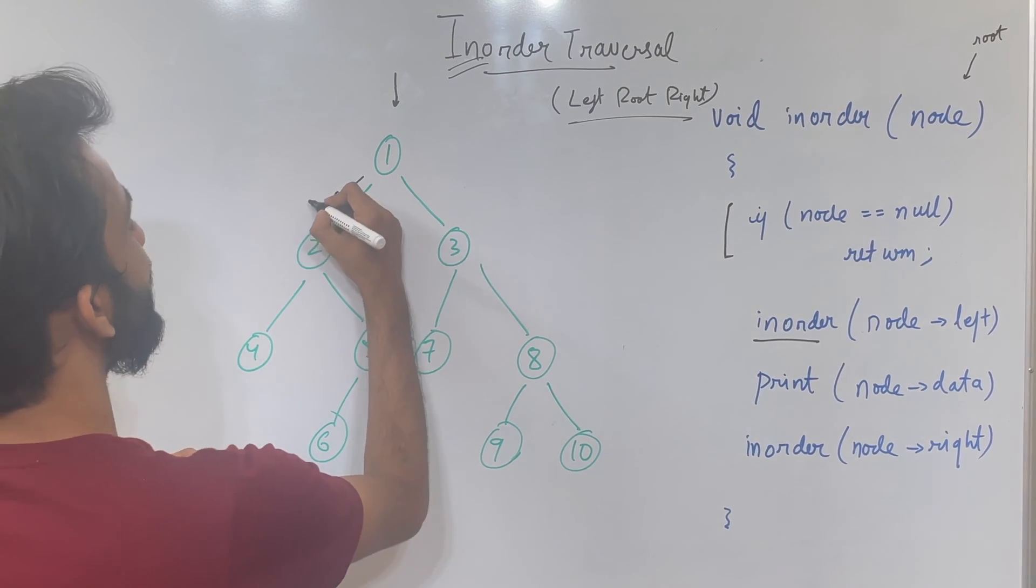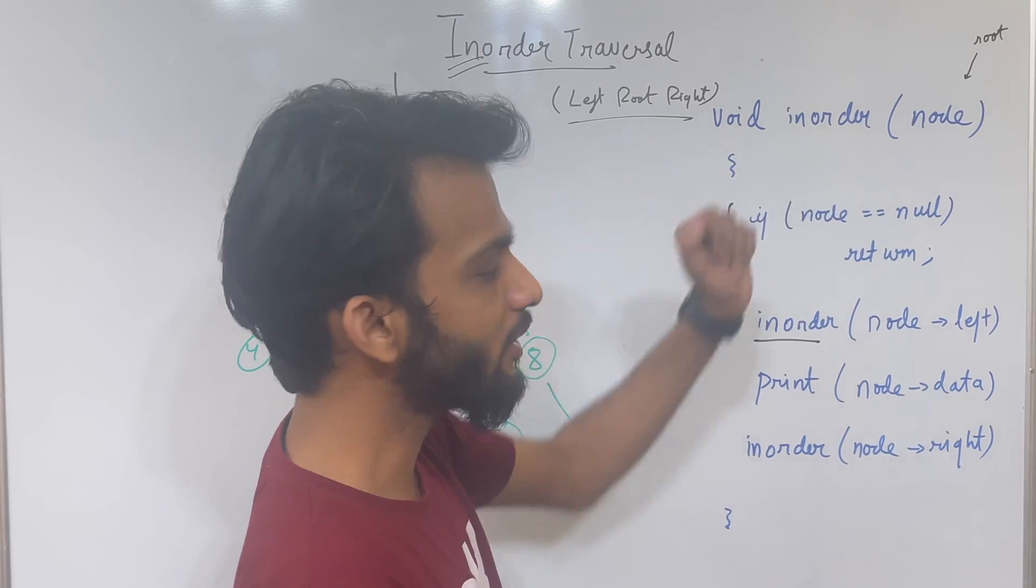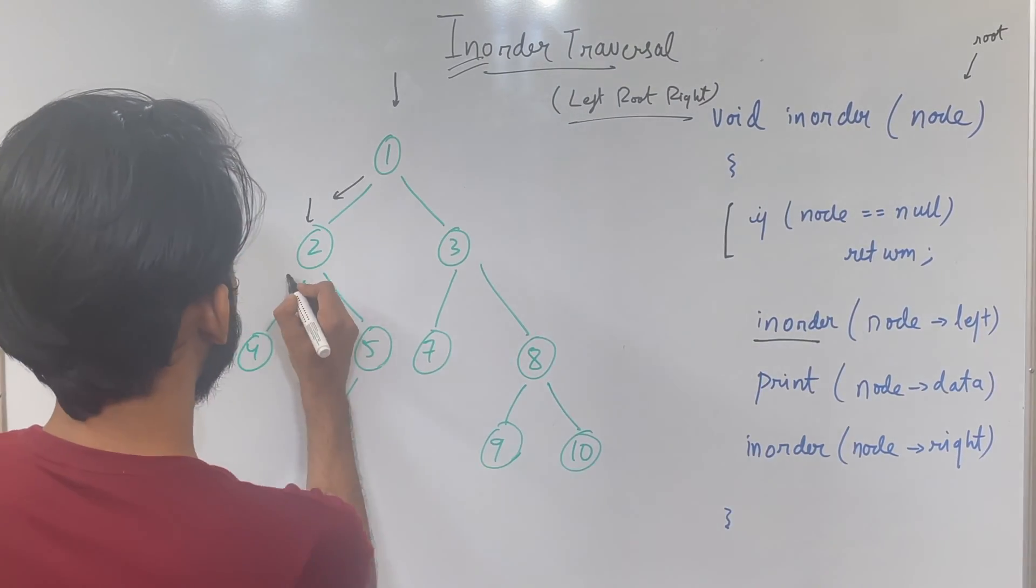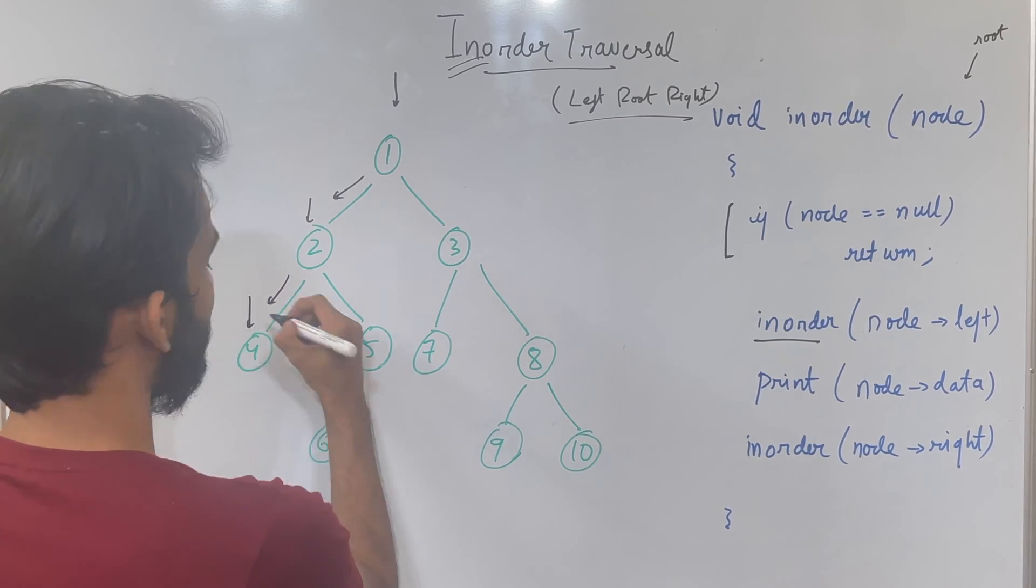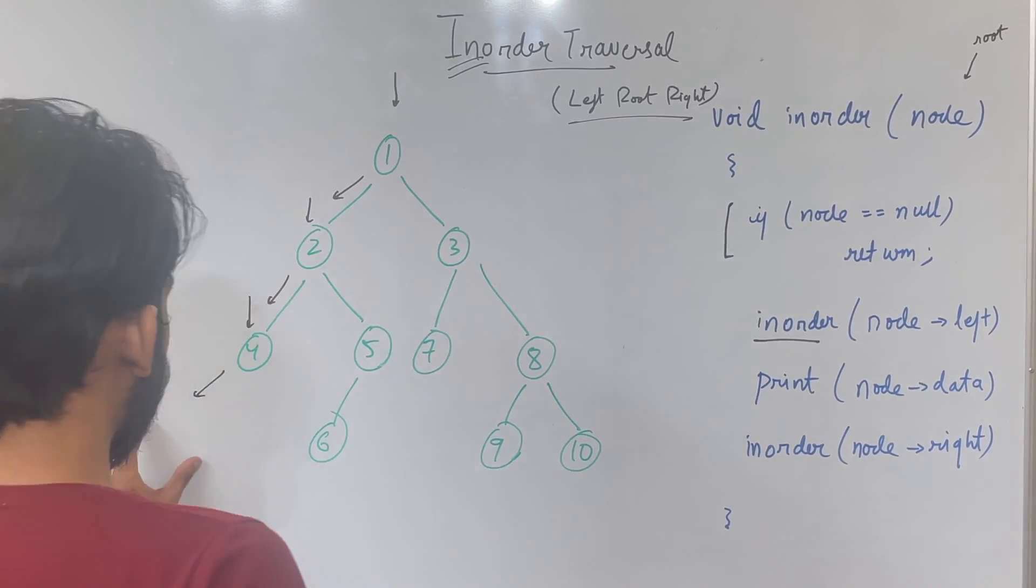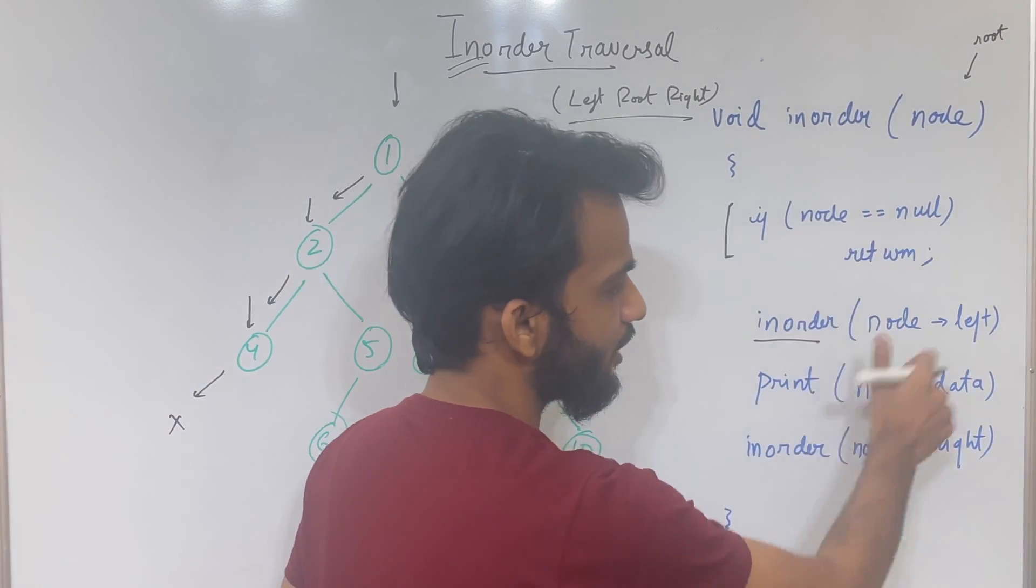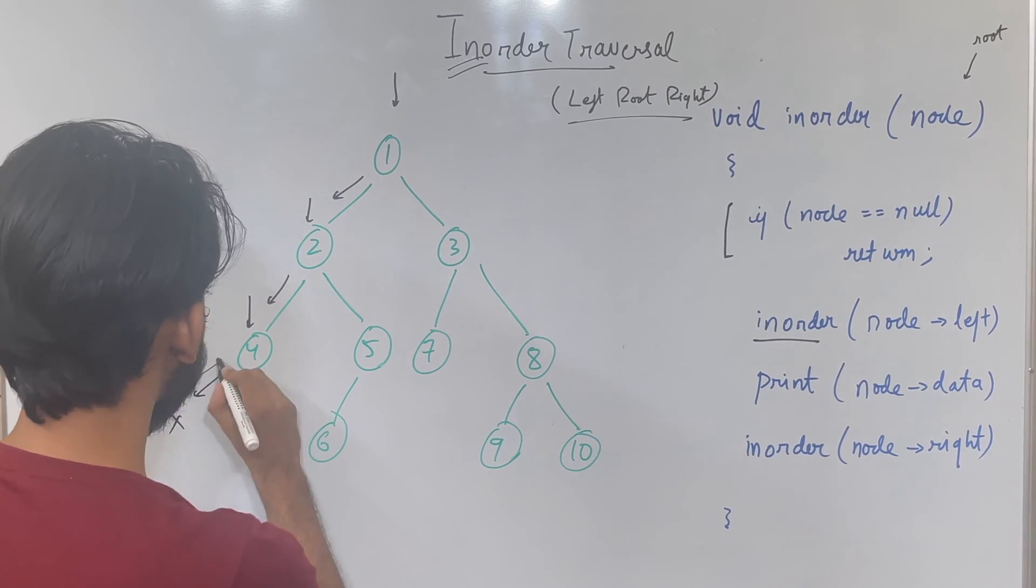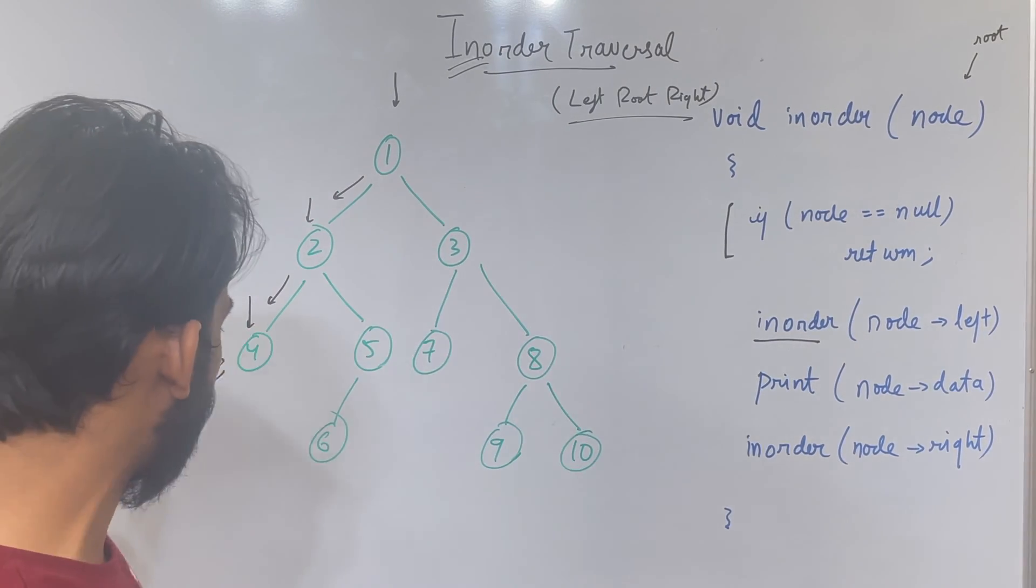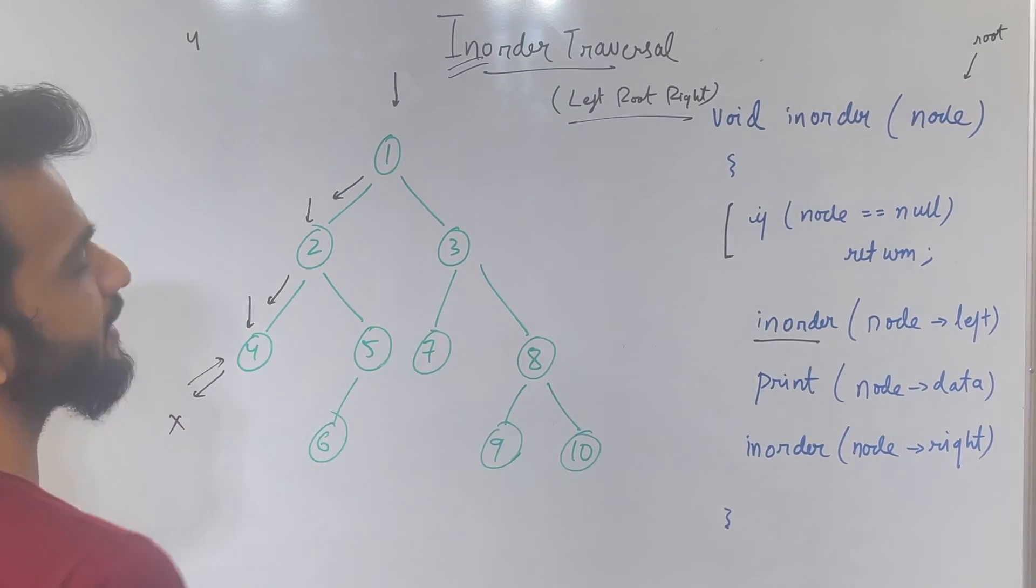node.left will go here and stand over here. Again, the call will come to this in order. This is not executed. Again says in order node.left. So this will go over here and come over here. Right now, again node.left goes over here to a null position, to a null position. So whenever it goes to null position, returns. So as soon as it returns, comes back. So this line was there, right? When to left comes back. After that, print is executed. So 4 will be printed.